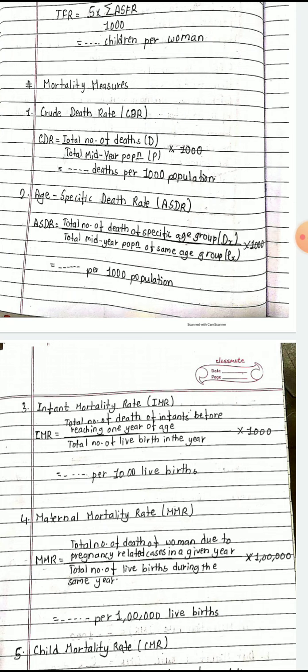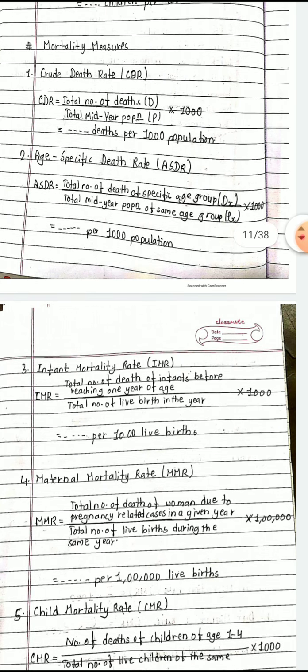Infant mortality rate (IMR) is the total number of deaths of infants before reaching one year of age, divided by the total number of live births in the same year, multiplied by 1000. Note: unlike other rates, the denominator here is total live births, not mid-year population. IMR formula has been asked in the SEE examination many times, so it is very important to remember. Unit: per 1000 live births.